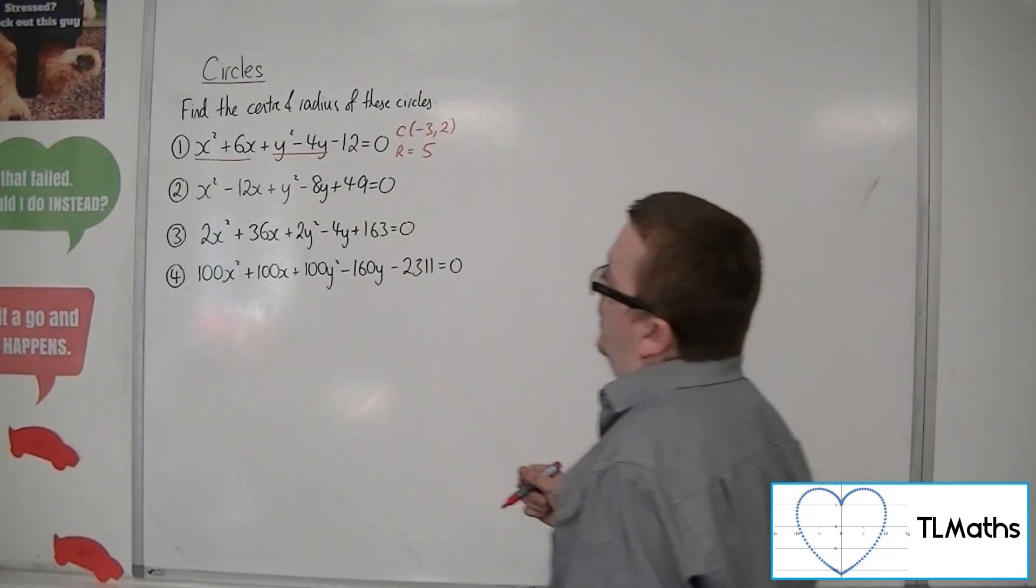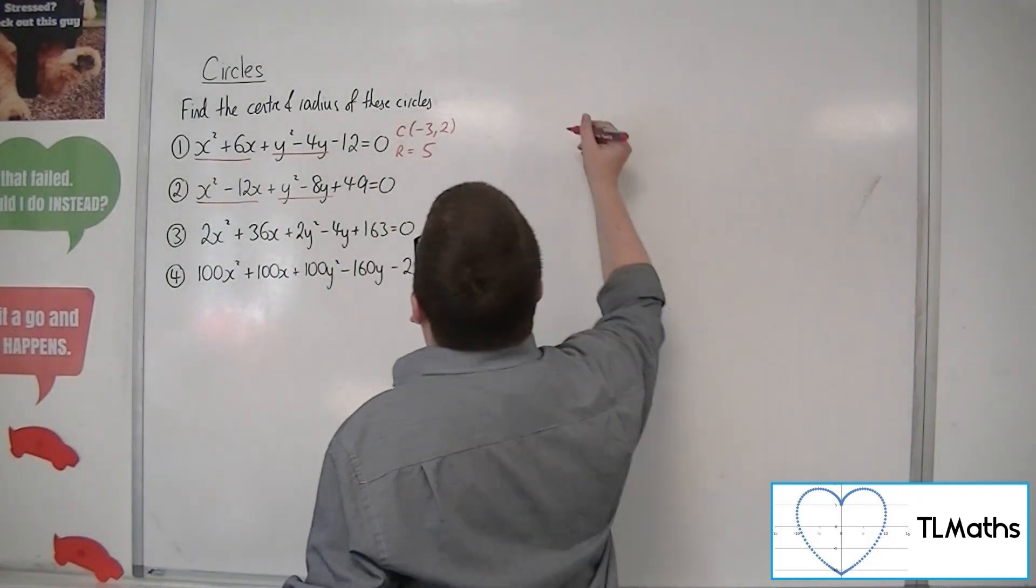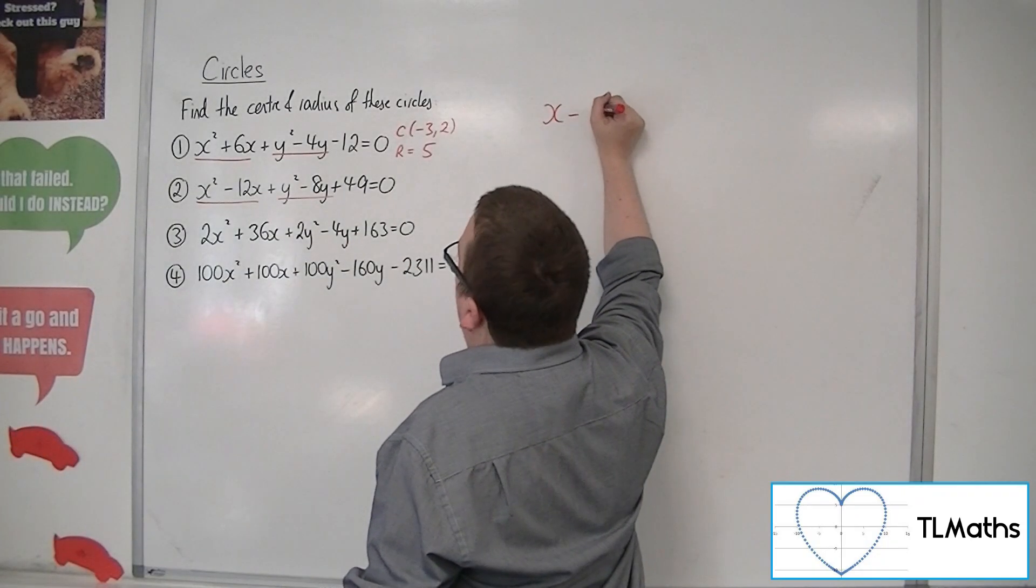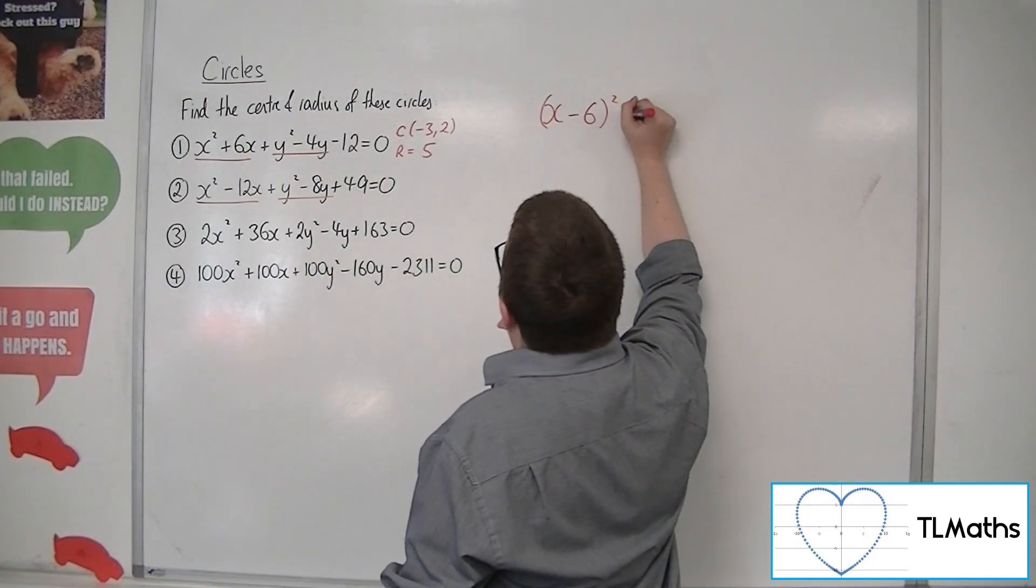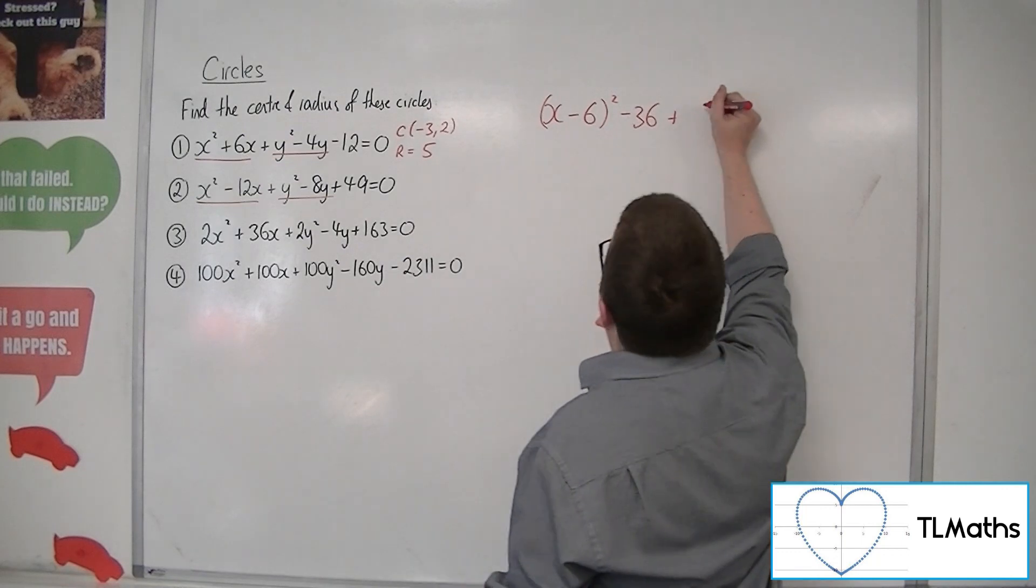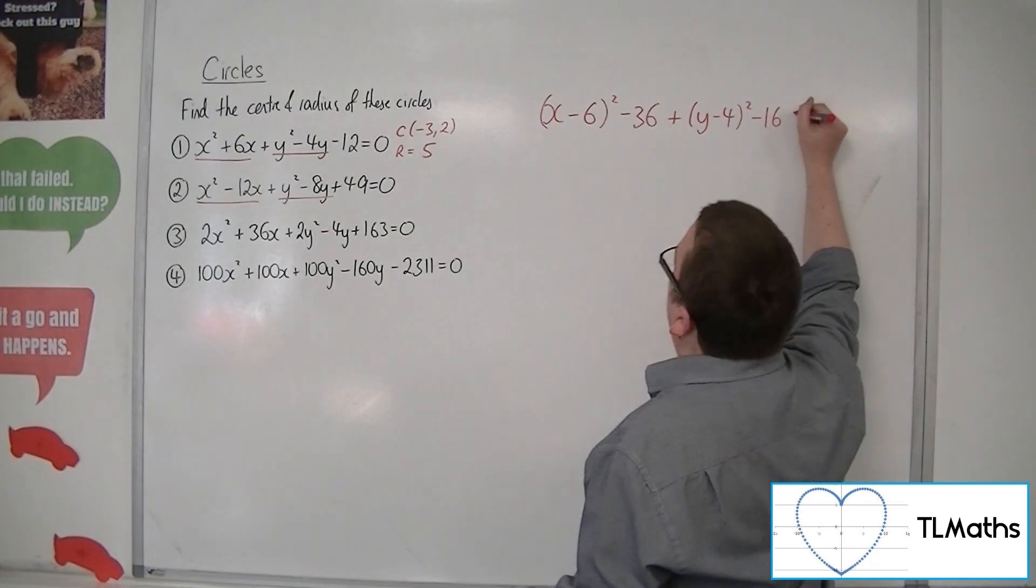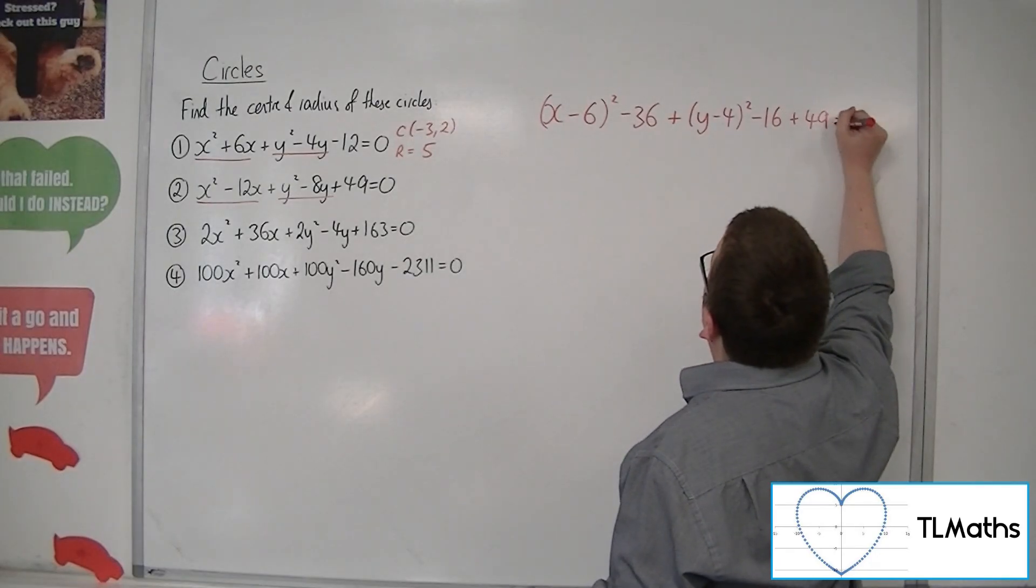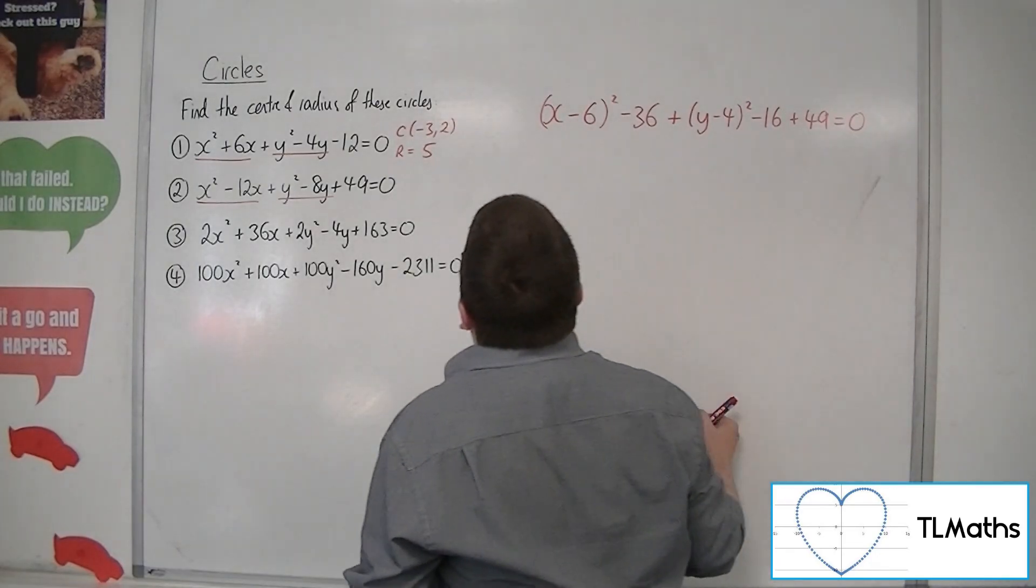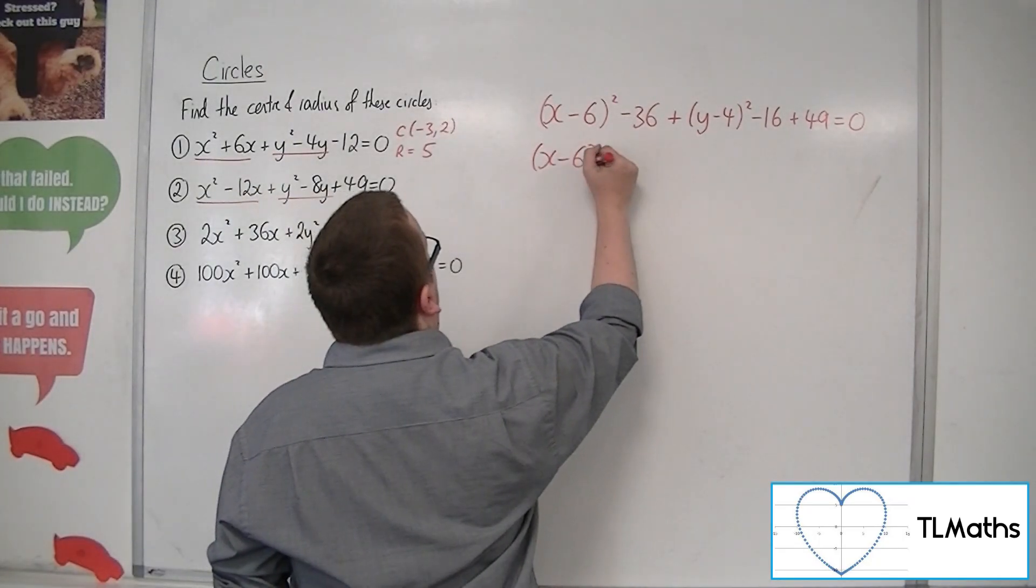So for number 2, if I complete the square on both the parts, I'm going to have x minus 6 squared, take away 36. And then for the y squared minus 8y, I'm going to have y minus 4 squared, take away 16. And I've got that plus 49 on the end. So if I write the brackets parts first.